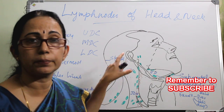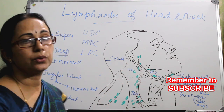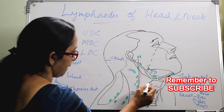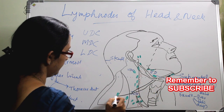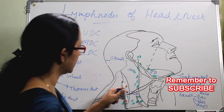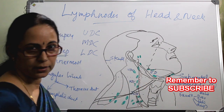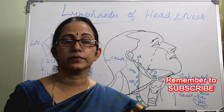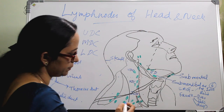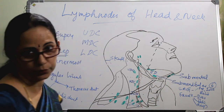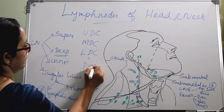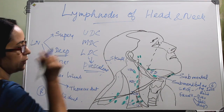The middle deep cervical extends from the carotid bifurcation up to the tendon of the omohyoid, which runs from the hyoid bone to the scapula. In this region lies the jugulo-omohyoid lymph node, which is the node of the tongue. The lower deep cervical extends from the level of the omohyoid up to the thoracic inlet, and is otherwise called the prescalene lymph nodes.